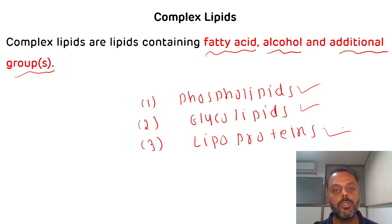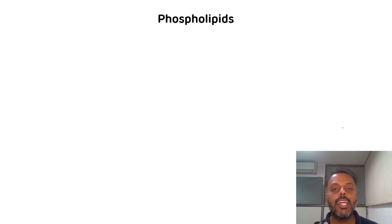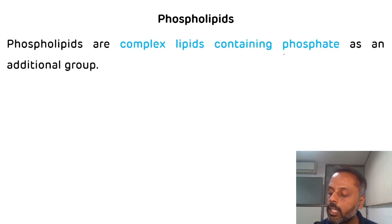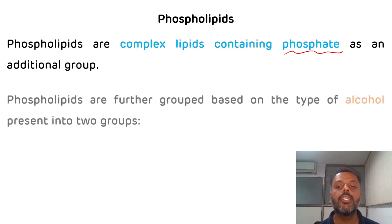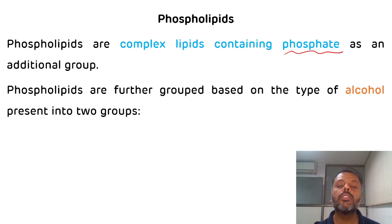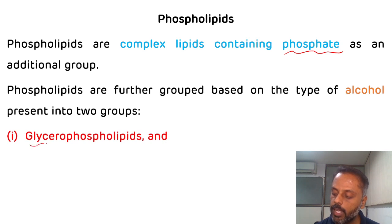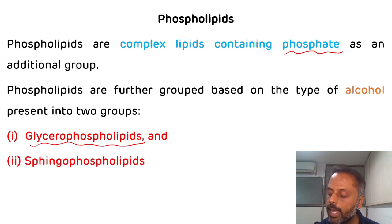Phospholipids, as the name suggests, contain phosphate as an additional group. These phospholipids are further grouped based on the type of alcohol present into two groups: glycerophospholipids, which contain glycerol as alcohol, and sphingophospholipids, which contain sphingosine as alcohol.